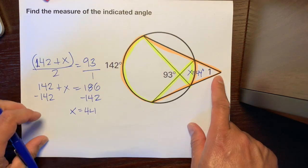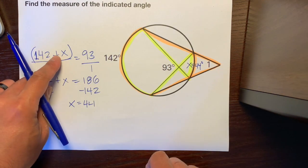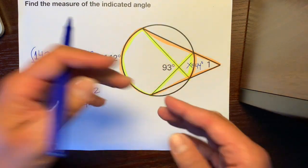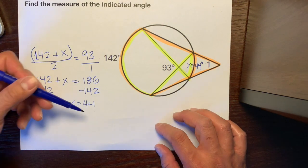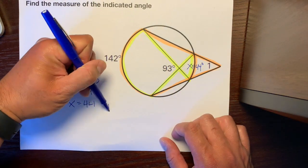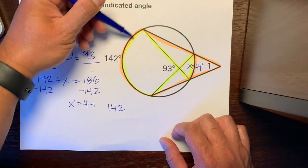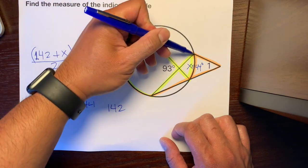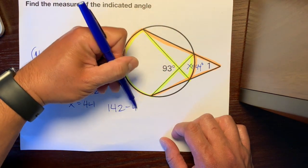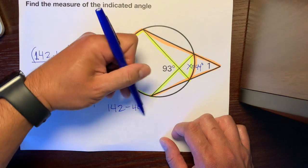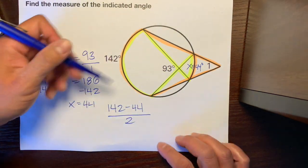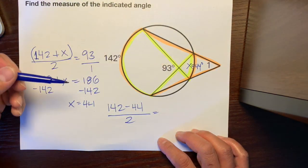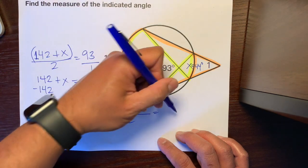So when they intersect on the outside, instead of adding like we did when they intersect on the inside, we're going to subtract. So we're going to take this 142, the far arc, and subtract it from 44, and divide by 2, and set it equal to angle 1.